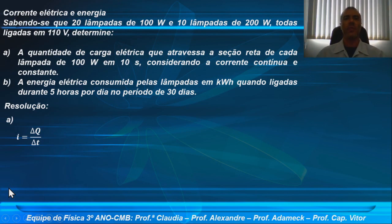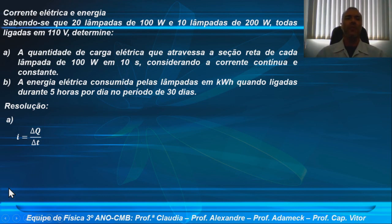Resolução. Letra A. Nesse referido intervalo de tempo, nós não temos a intensidade de corrente elétrica que percorre a lâmpada de 100 watts. Mas nós temos uma relação entre a taxa com que a energia elétrica é transportada pela corrente elétrica para o funcionamento da lâmpada, quando ela é ligada em uma certa DDP. Nós temos a DDP e temos a potência.